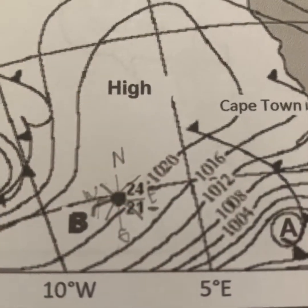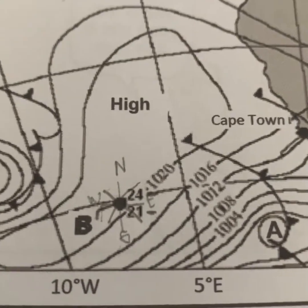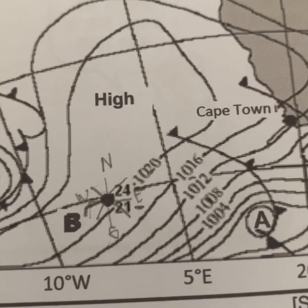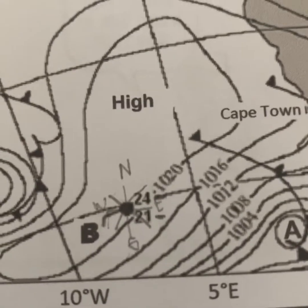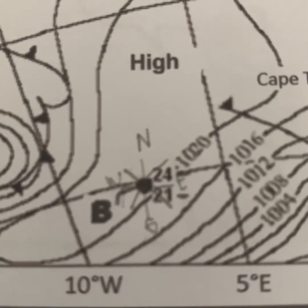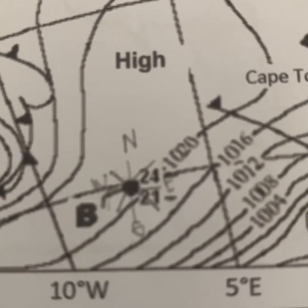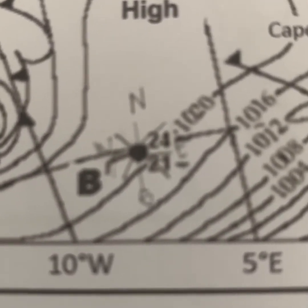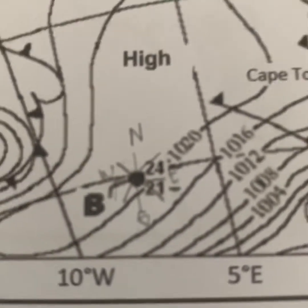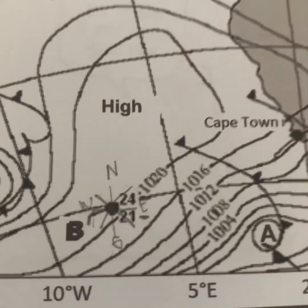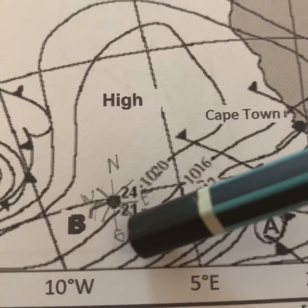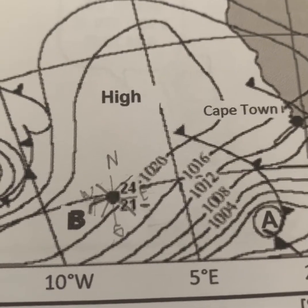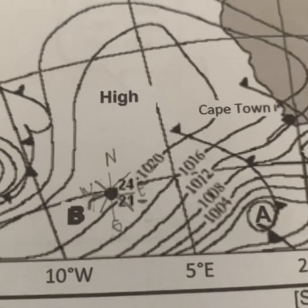If there were two tick marks it would be 20 knots. The next question says: give two points of evidence from weather station B that indicate the possibility of rain is high. Firstly, the cloud cover is overcast, meaning there are a lot of clouds in the sky with barely any sun visible. Secondly, the air temperature and dew point temperature numbers are close to each other, meaning there's a lot of humidity, so the possibility of rain is high.